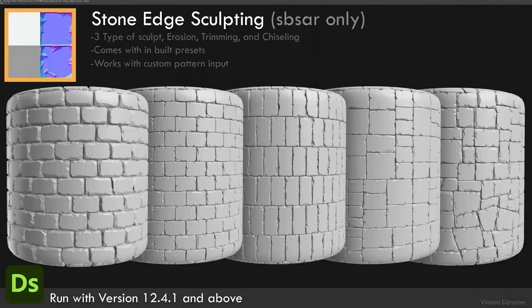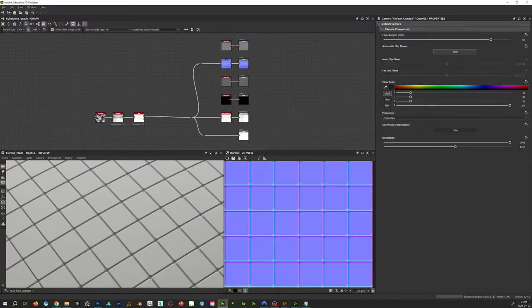Hey, this is Vincent. In this video, I want to go over my new tool, the Stone Edge Sculpting. This tool is intended to give a base sculpt with different options like erosion, trimming, and chiseling. So let's jump right in.